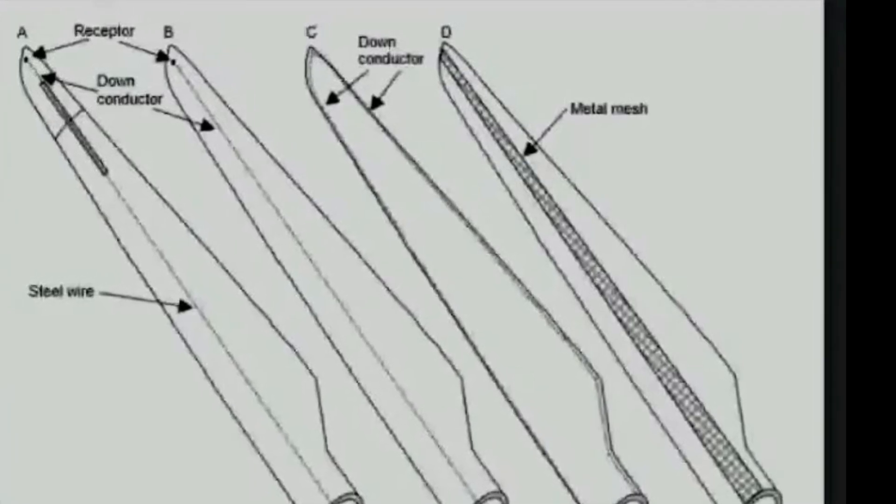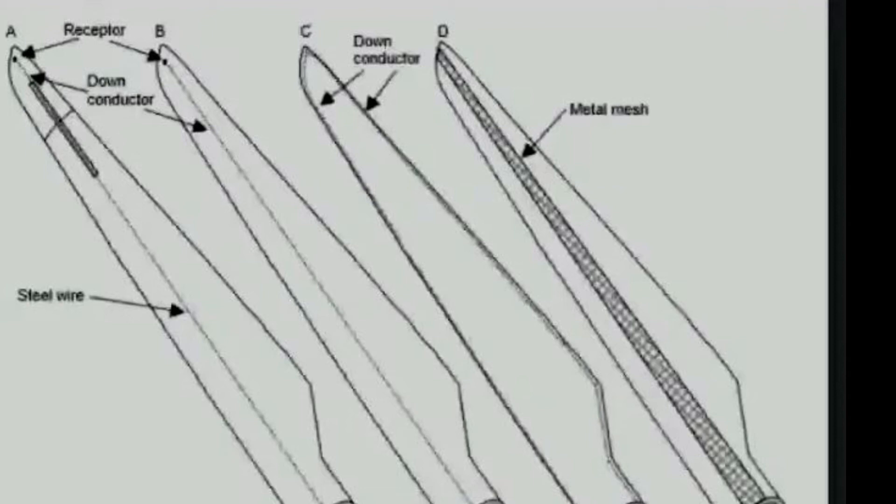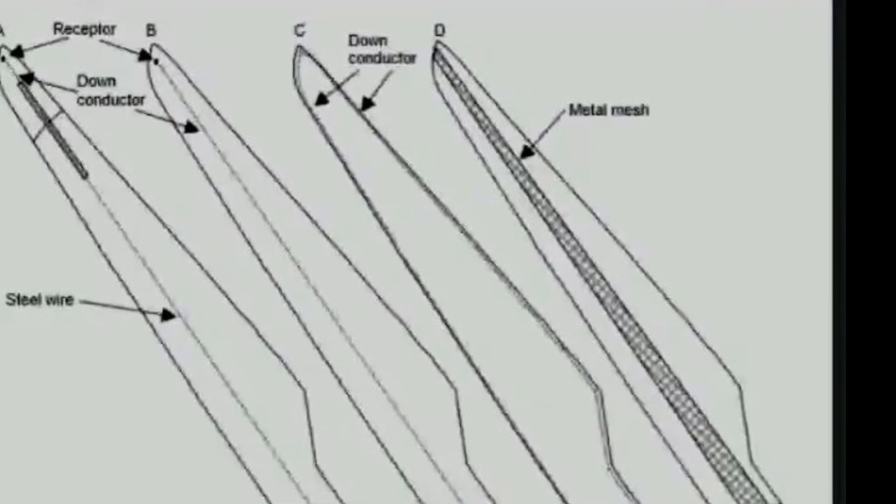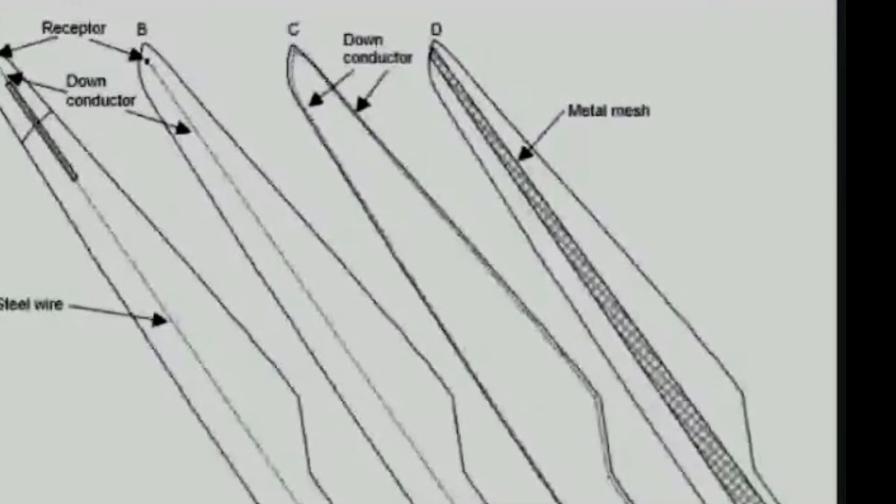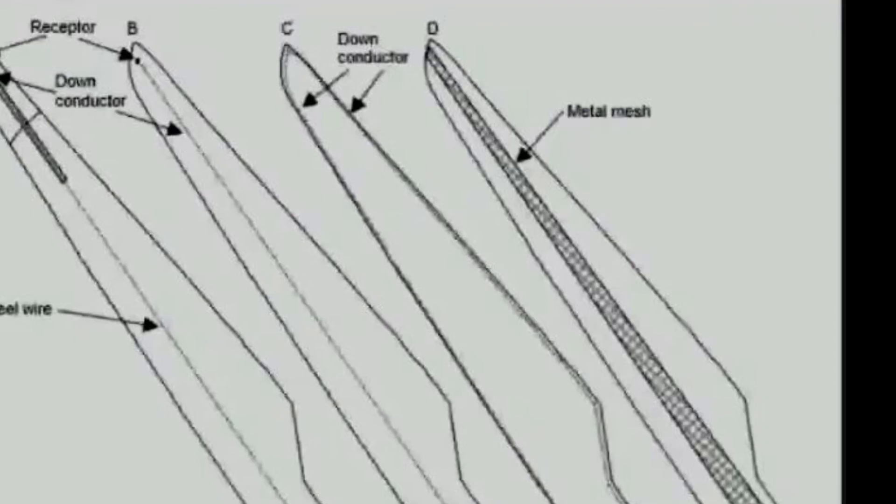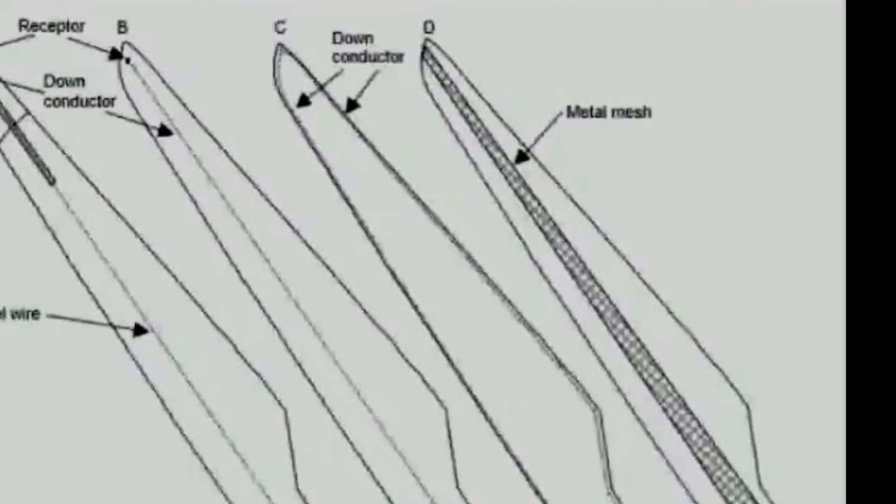A network of conductors to move lightning energy from the strike termination devices toward earth, a network for ground terminations which are ground rods, and equal potential bonding and surge protection devices.